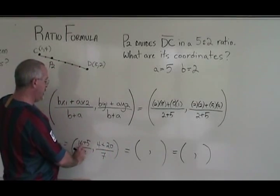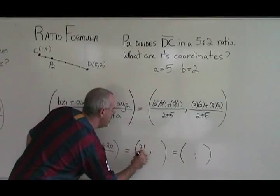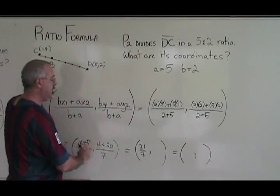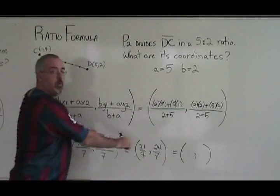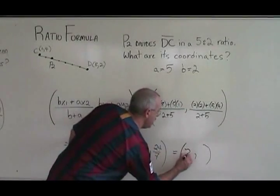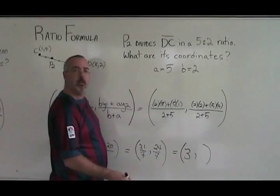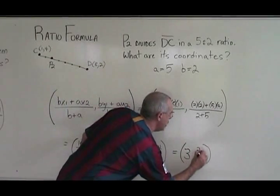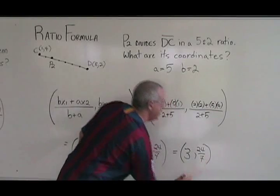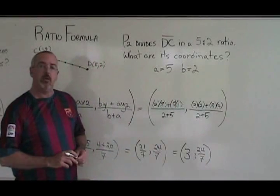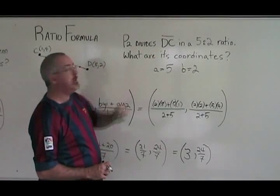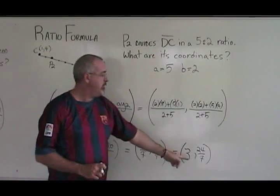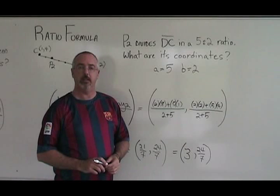Sixteen plus five is equal to twenty-one over seven. Four plus twenty is equal to twenty-four over seven. And twenty-one over seven simplifies to three. Twenty-four over seven cannot be simplified, so we just keep it as twenty-four over seven. The coordinates of the point P2 that divides segment DC in a five to two ratio are three comma twenty-four over seven.